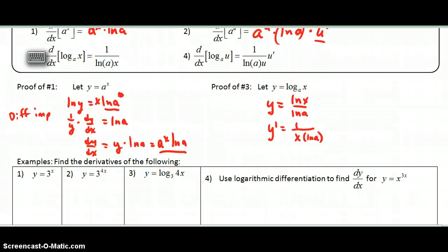So if we use our rules here, now y equals 3 to the x. You can rewrite this and take the log of both sides, or else you can just use the rule here. So y prime is equal to 3 to the x, and then you just multiply by the ln of the base. So it's ln 3. If you want to put that in parentheses, you can.